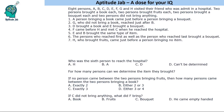Welcome to Aptitude Jab. This is an arrangement-based set. There are eight persons A to H who visited their friend admitted in a hospital. Two of these persons brought a book each, two persons brought fruits, two persons brought a bouquet, and two persons did not bring anything. Using the given conditions, we need to figure out which person brought which item.